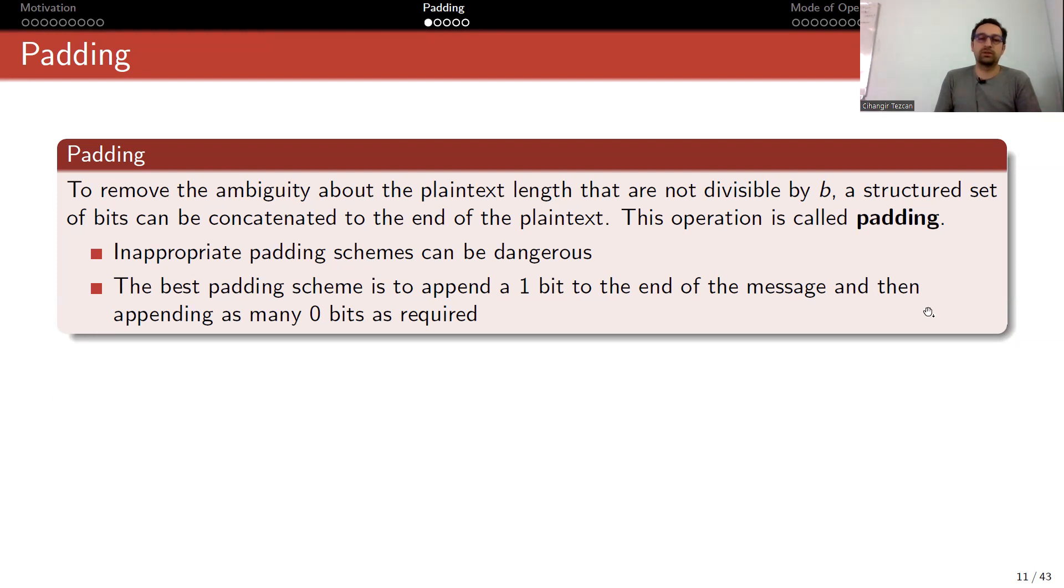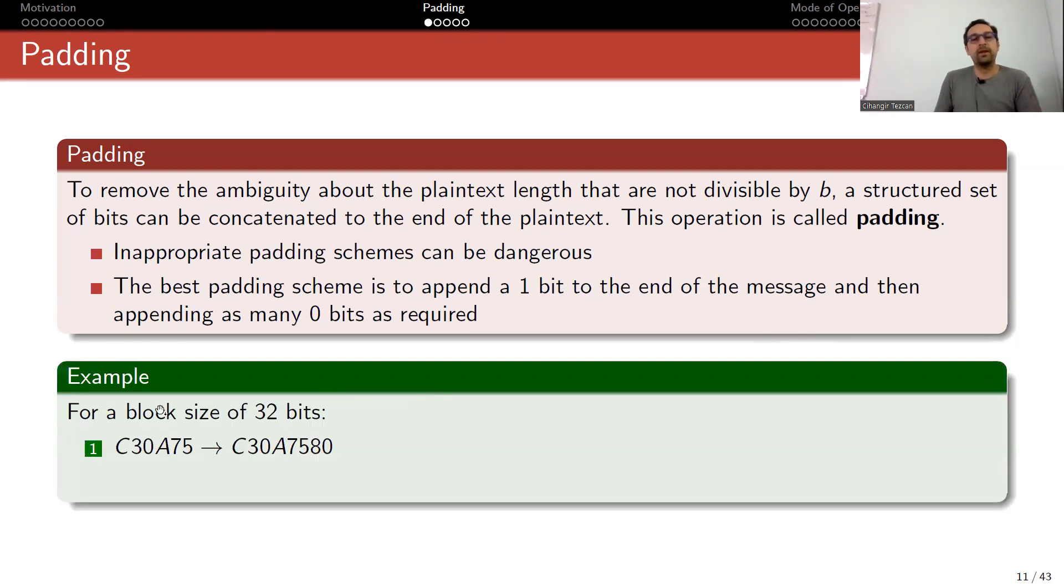Let me show it with an example. For a block size of 32 bits, here we have three bytes, 24 bits. So you have to add a one byte padding which starts with a single bit of one, then seven zeros. In hexadecimal notation, this corresponds to 80. So this 80 part is the padding as a byte.